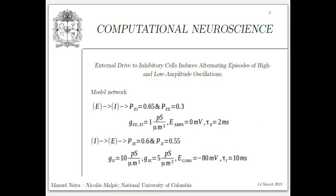In order to have a close-to-reality simulation we adjusted the connection probabilities between networks. We applied a correction factor for excitatory-to-inhibitory cells of 65% and excitatory-to-excitatory of 30%, using a conductance parameter of 1 pico-siemens per micrometer squared, a reversal potential of 0 millivolts, and a tau of 2 milliseconds. For inhibitory-to-excitatory cells we used a connection percentage of 60%, and inhibitory-to-inhibitory at 55%, with a reversal potential of 80 millivolts and a time delay of 10 milliseconds.